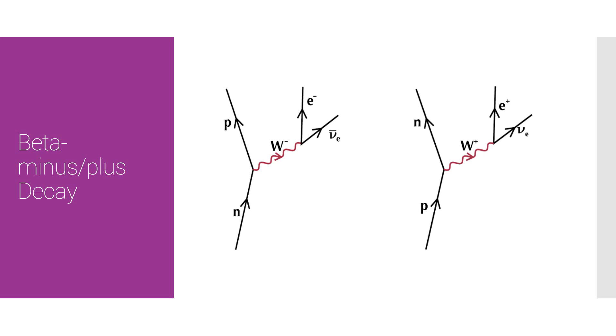And pretty much the opposite thing with beta plus decay. A proton, conserving its W plus charge, turns into a positron and an electron neutrino and turns into a neutron. Baryons on one side, leptons on one side. It's complicated business, but it's also simple business once you memorize the rules.